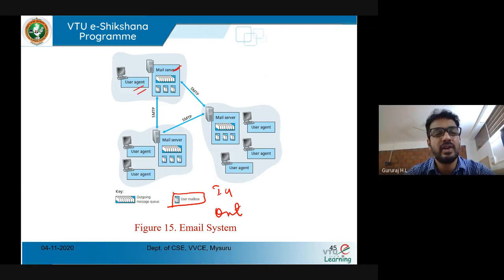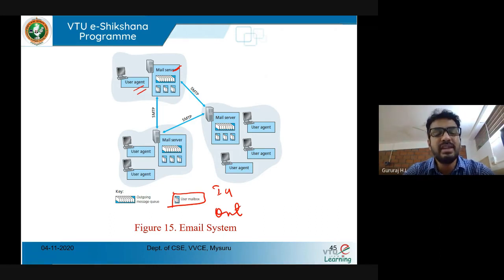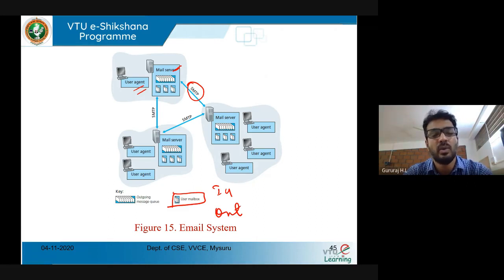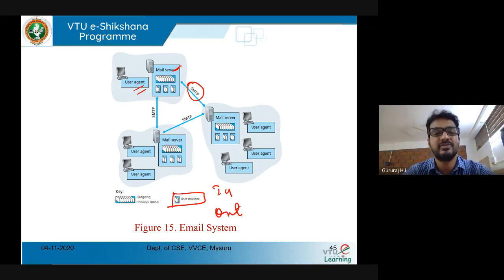These are the three important entities: user agent, mail server, and the protocol enabling communication between one mail server and another — SMTP, Simple Mail Transfer Protocol. Whether it's Gmail, Yahoo, Hotmail, or any other application, they all must go through this mechanism using SMTP protocol.